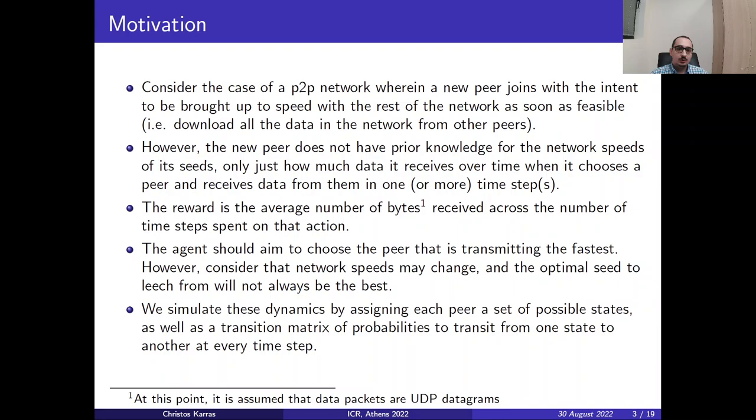Moving on to the motivation of this work, consider the case of a peer-to-peer network where a new peer joins with the intent to be brought up to speed with the rest of the network as soon as possible. However, the new peer does not have prior knowledge for the network speed of its successors or predecessors, only just how much data it receives over time when it chooses a peer and receives data from this peer in one or more time steps. The reward is the average number of bytes received across the number of time steps spent on that action.